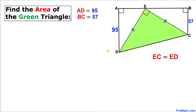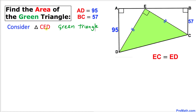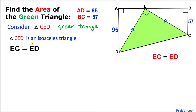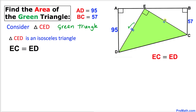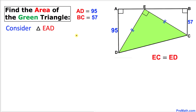So let's go ahead and get started with the solution. Here's our very first step: let's go ahead and consider this green triangle CED. We can see that this triangle is an isosceles triangle since this side is equal to this side.